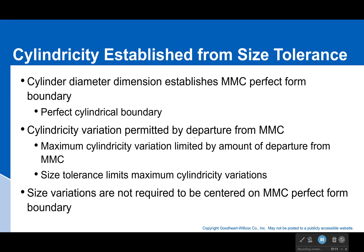Now, as with all surface tolerances, there is a perfect form boundary that's established by our size tolerance. So we have that max material condition perfect form boundary that we're not allowed to break. In this case, it would be a perfect cylindrical boundary, so we only get cylindricity variation when we depart from the max material condition.